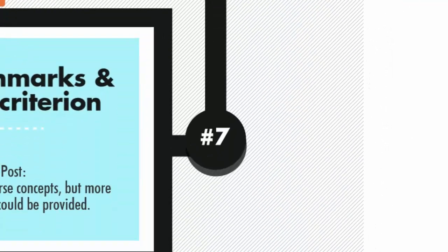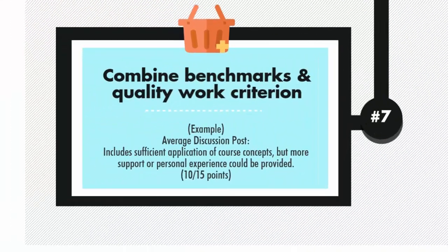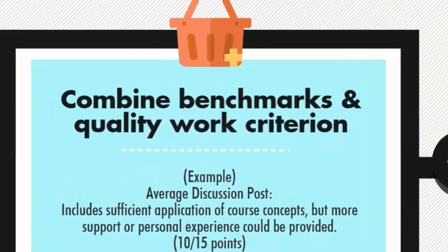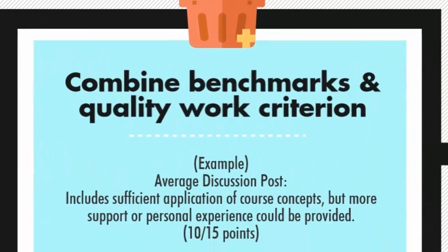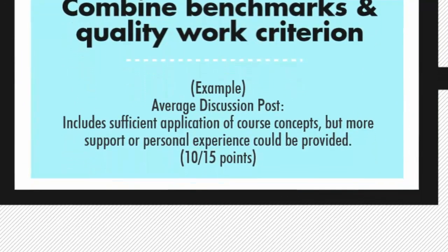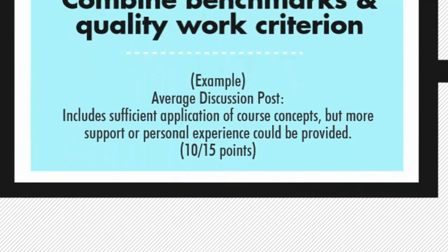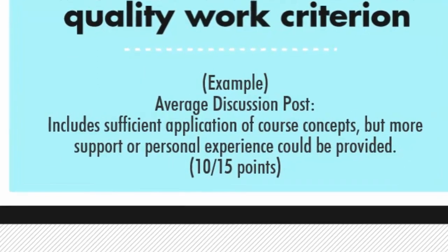Step 7: Combine benchmarks and quality work criterion. For example, "An Average Discussion Post includes sufficient application of course concepts, but more support or personal experience could be provided." This would be worth 10 out of 15 points.